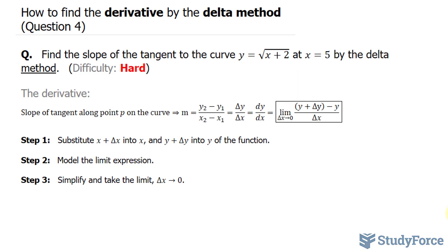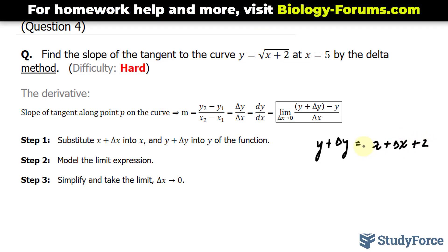Step number 1 says substitute x plus delta x into x and y plus delta y into y. If we do that, we should end up with this becoming y plus delta y equals and this becoming x plus delta x plus 2, all square rooted.